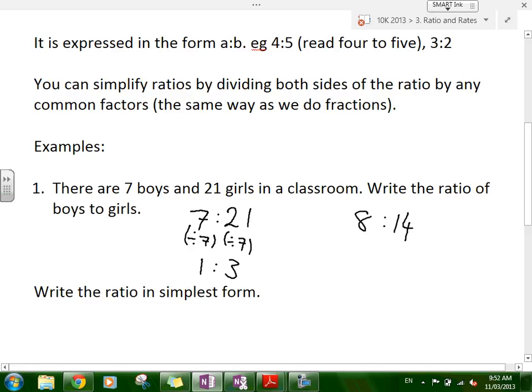And simplify that. What's the common factor between 8 and 14? 2. So divide by 2. So it's 4 and 7. What that's saying is that for every 4 boys in the class, there's 7 girls.